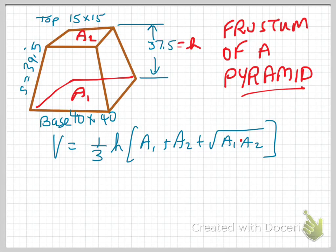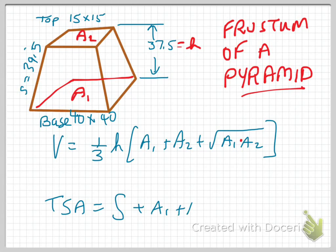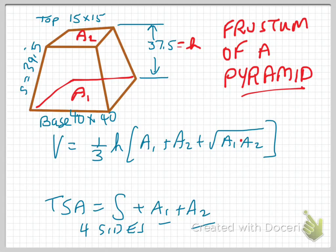The formula for the total surface area is given by S, which is the lateral surface area, plus A1 plus A2. The lateral surface area is simply the sides. In this case, there are four sides, and we have the area of the top and the bottom as well for the A1 and A2 values.